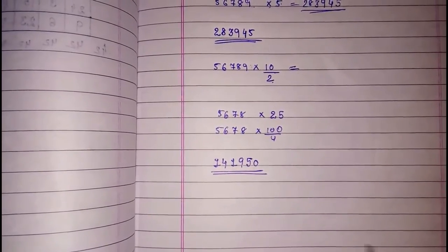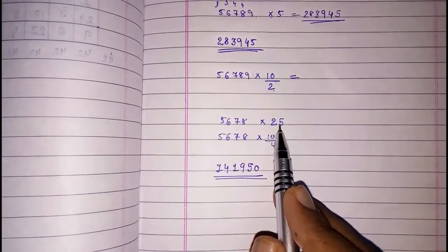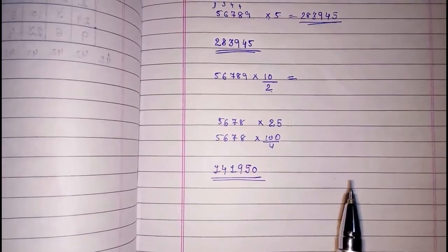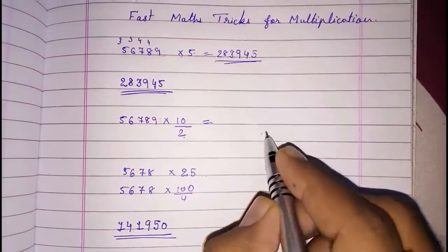This way we can use for 125 also. Then at the place of 125, what we will put? 1000 by 8. This way we can solve this. Now I'm going to tell you how to multiply any number with 11.